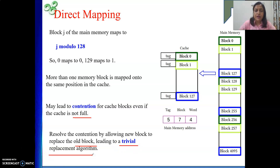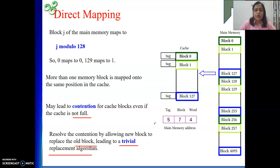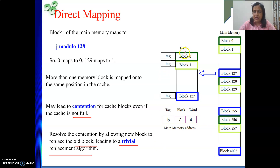Trivial means I already know which block I need to remove - I don't need to think much or apply any complex algorithm. I know whom to replace. Simply that block will be sent back to main memory and the incoming block will take its position.